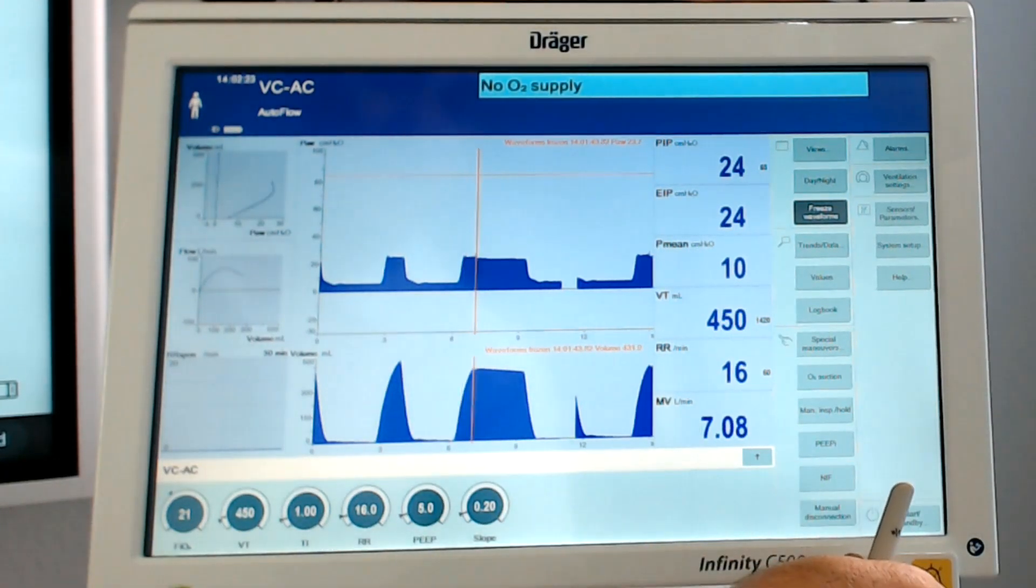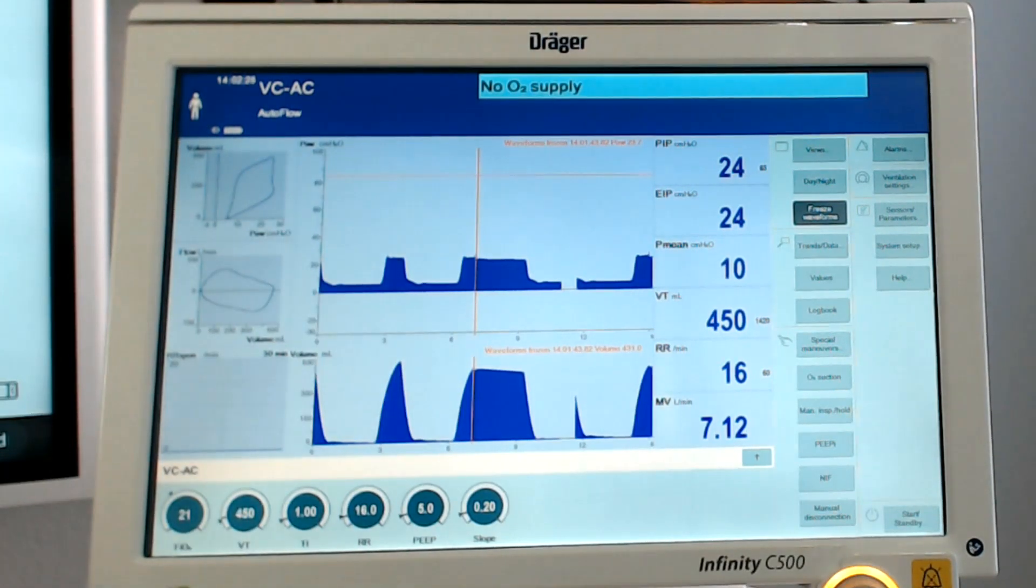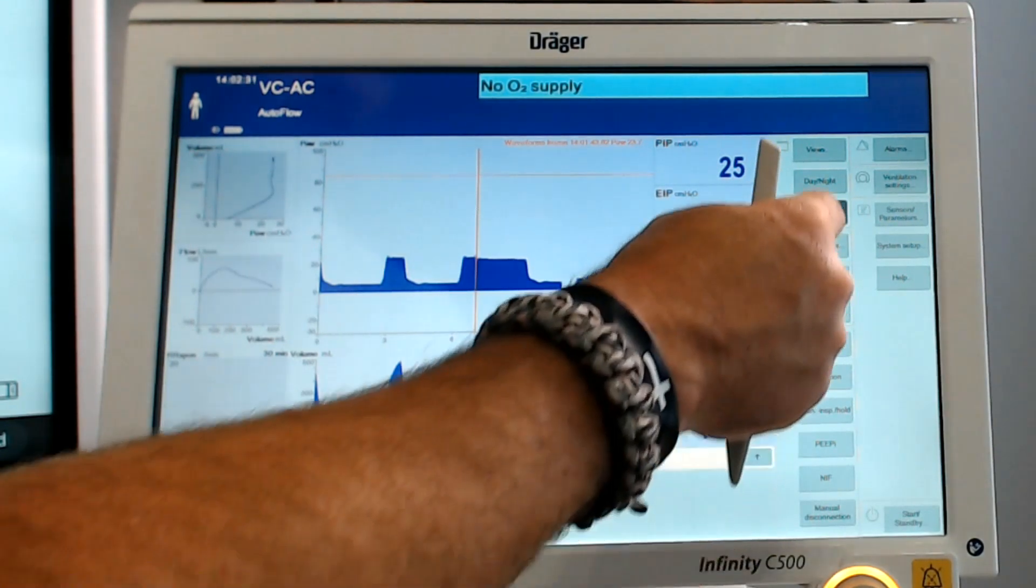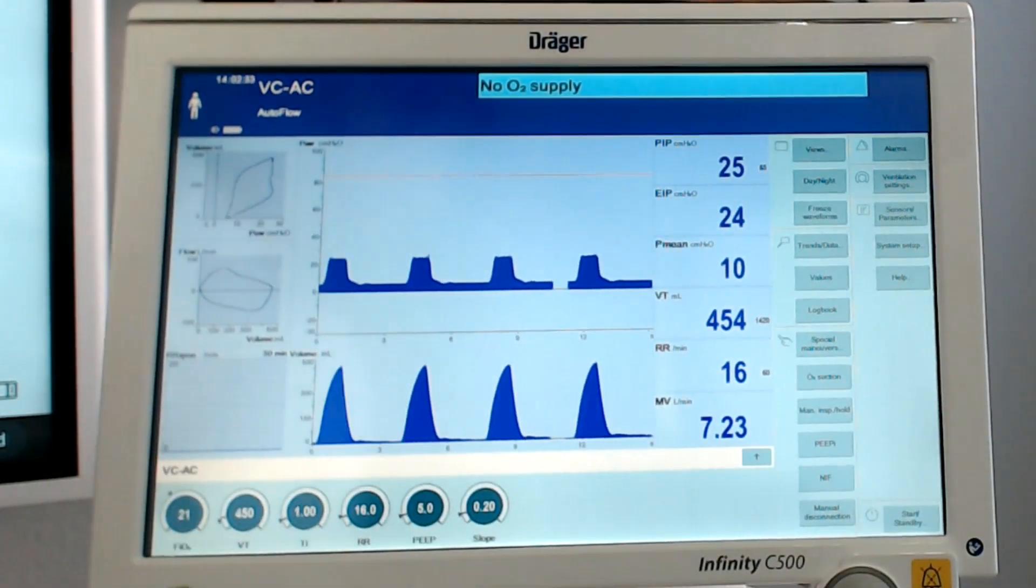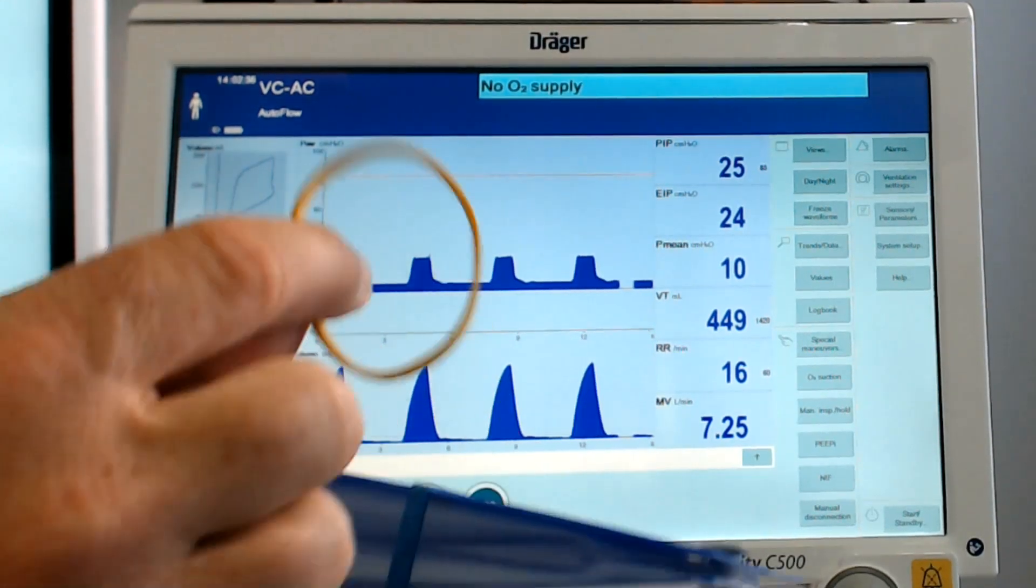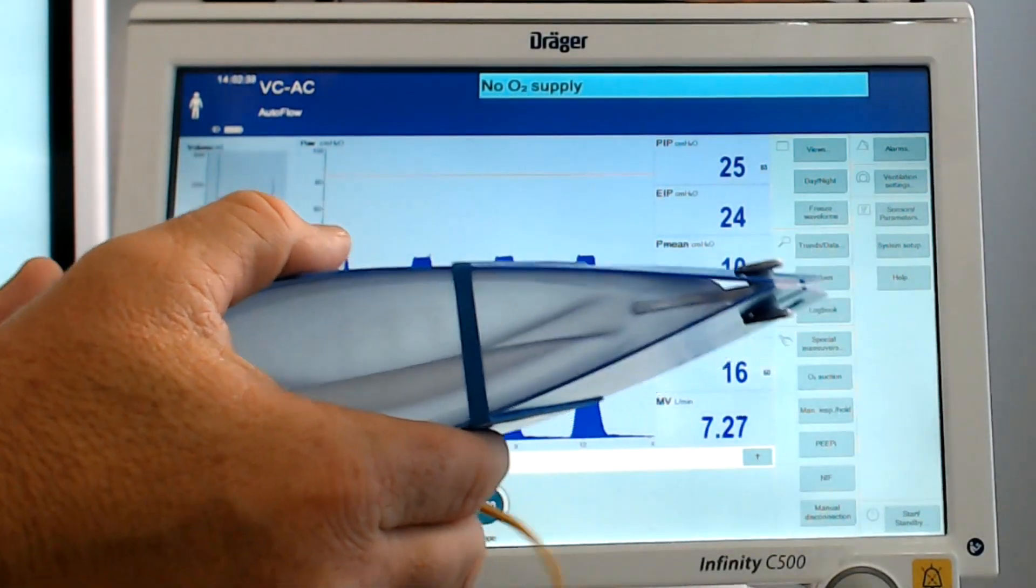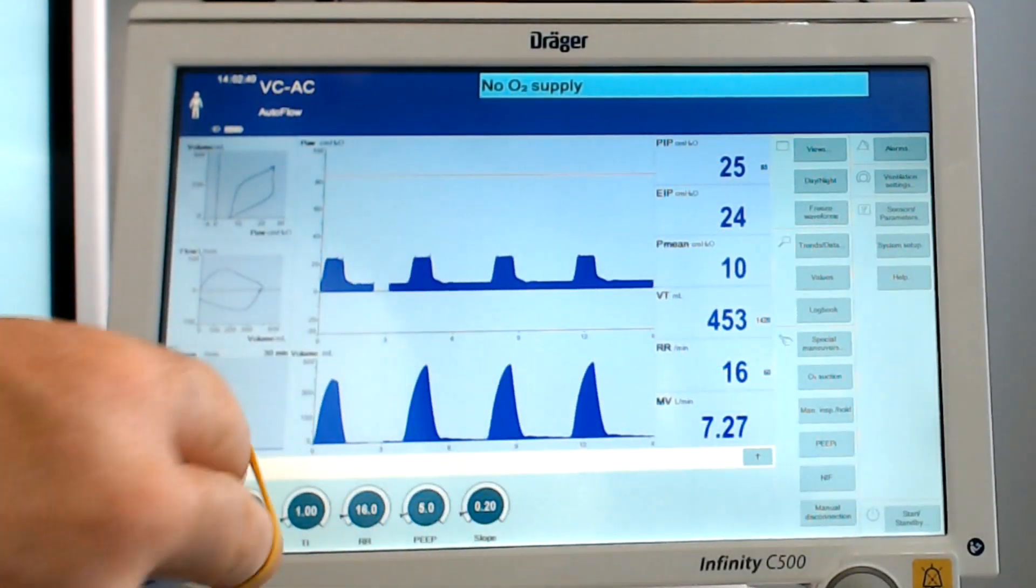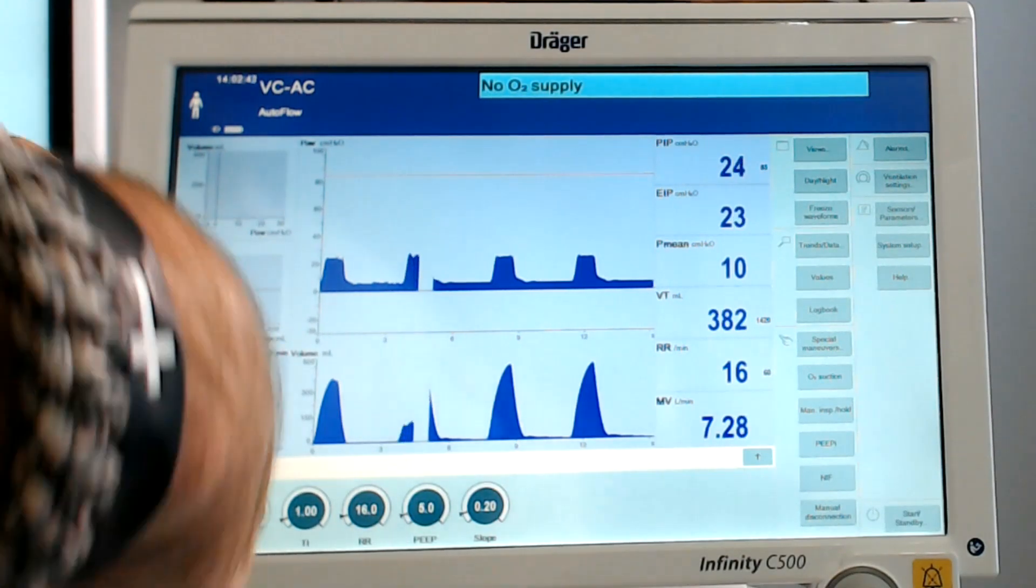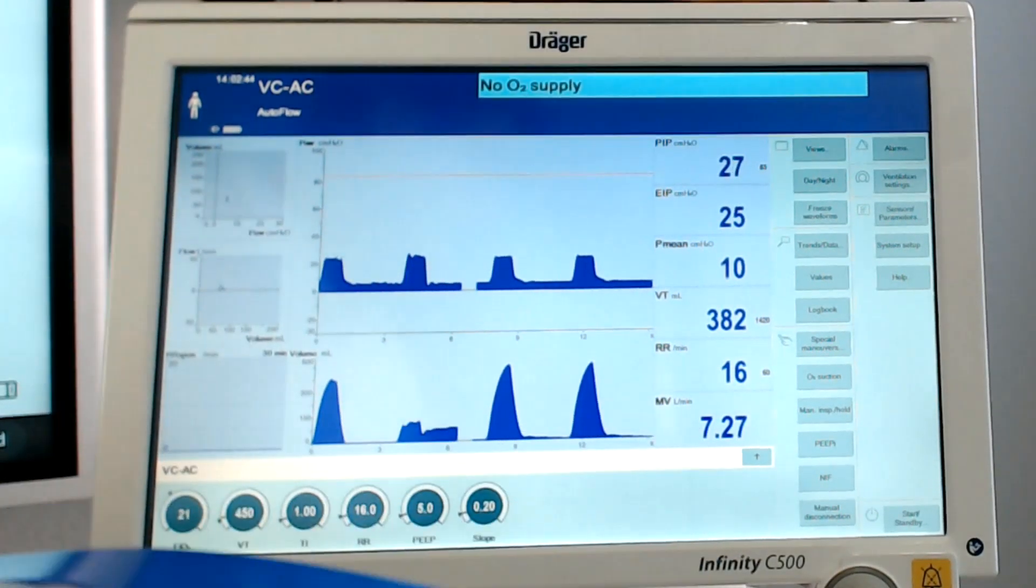And our tidal volume that was delivered was exactly 450 milliliters. Now, just like we did in the previous videos, I'm going to take another rubber band and I'm going to reduce the compliance of this test lung. So I put this on here like this. We'll see what happens.